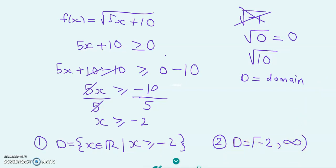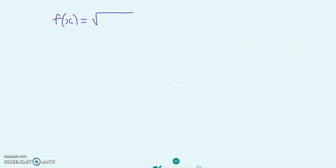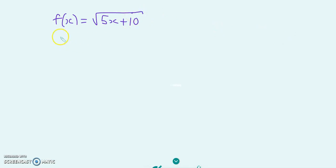Now let's determine the range. The range is the set of all possible y values. Here, y is our f of x — it's just another way to say f of x. You give me an x, and f of x will give you a y value. So we can write y equals the square root of 5x plus 10.